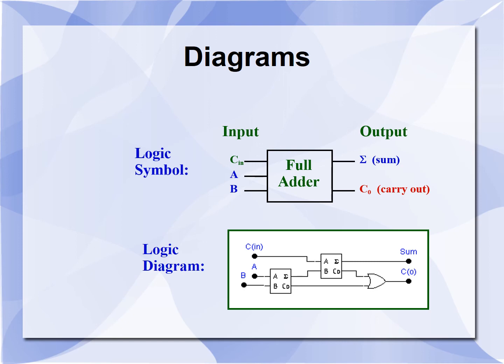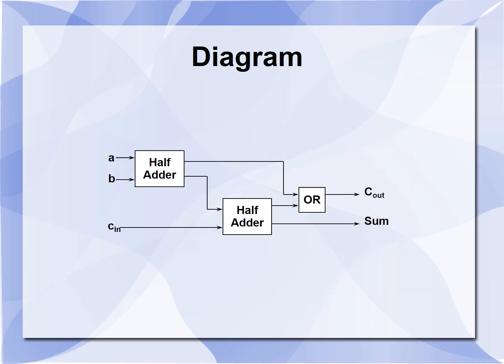The first carry is produced from the first half adder, and the second carry is produced from the second half adder. The output of the first half adder is cascaded onto the second half adder. The sum output of the first half adder is fed as input to the second half adder, and C-in is also fed as input. At the output, we get the sum, and whatever carries are generated from the first and second half adders are combined to produce the final carry.